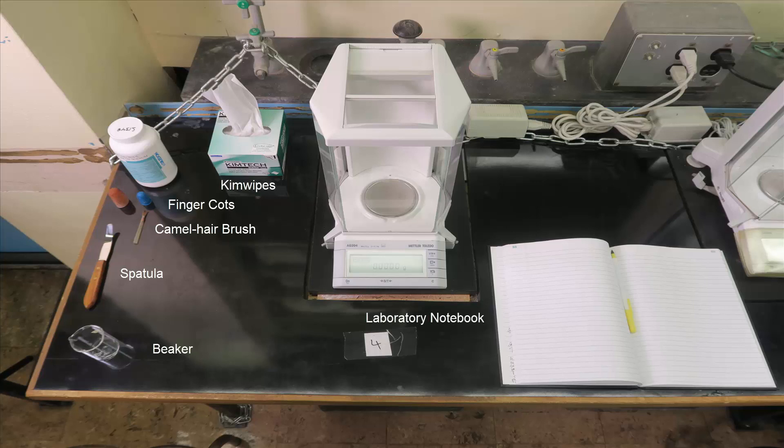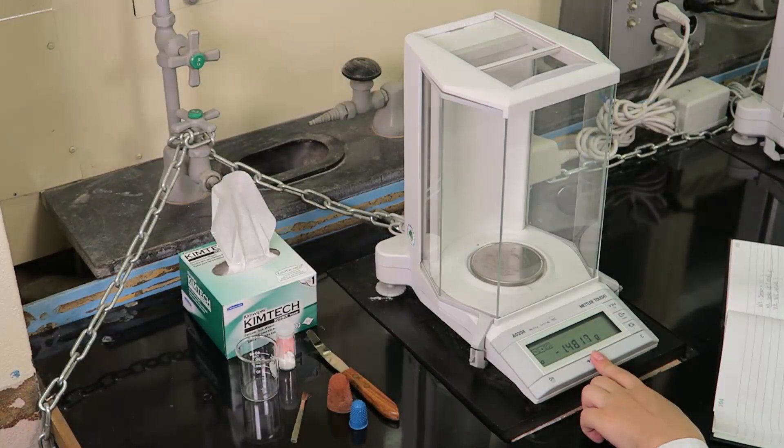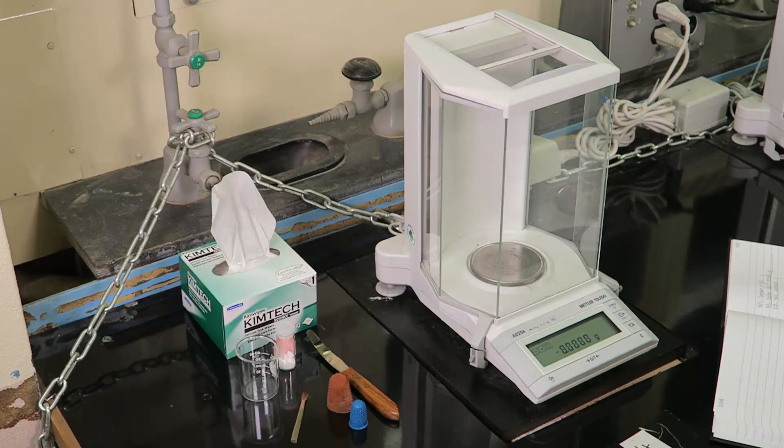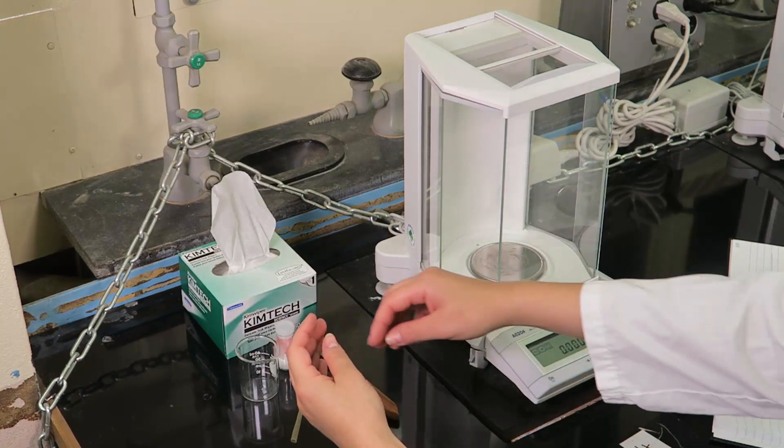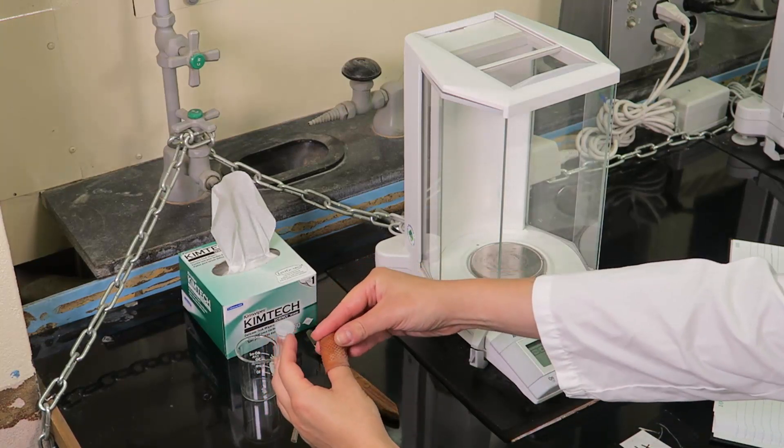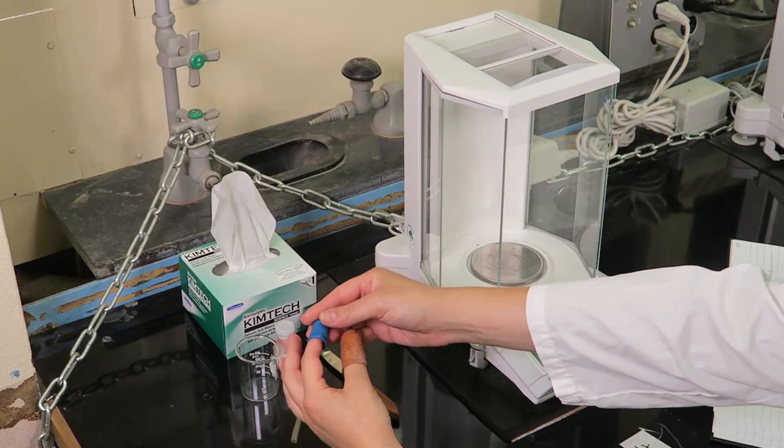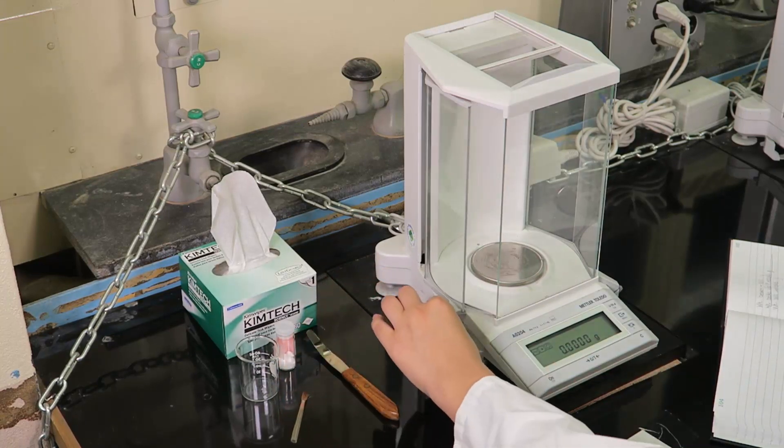Ensure that proper personal protective equipment is used. First, zero the analytical balance with all the doors closed. It is important to handle the compound container with finger cots, gloves, or a kim wipe to avoid adding mass to the container from oils in your hands.